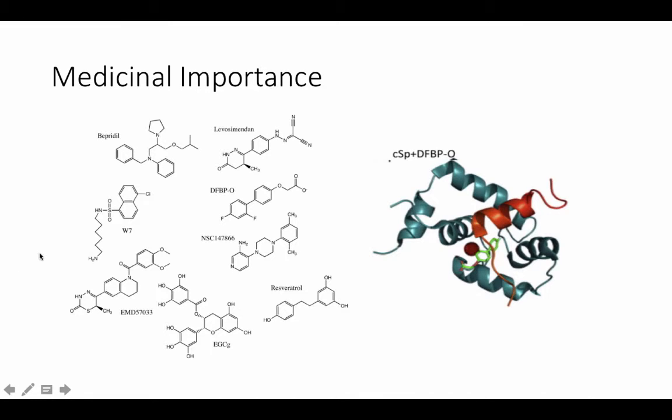Cardiac troponin C's association with HCM makes it a target for treatment of this condition. Displayed here are chemical compounds known to bind to cardiac troponin C. Of these compounds, a molecule called DFBPO was shown to bind the interface between the N-terminus of cardiac troponin C and cardiac troponin I, enhancing the binding between these two proteins and increasing calcium sensitivity. This helps improve cardiac output and combat some of the symptoms associated with HCM.